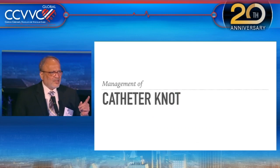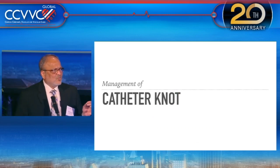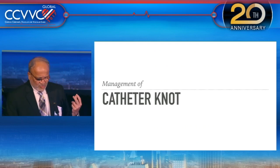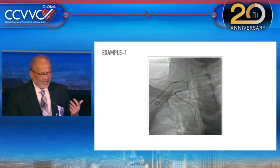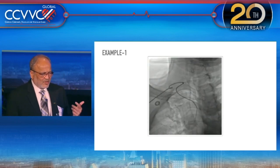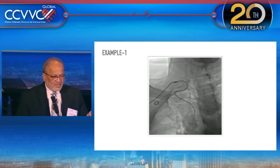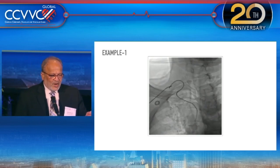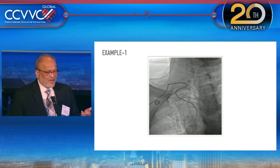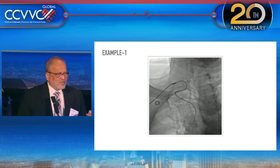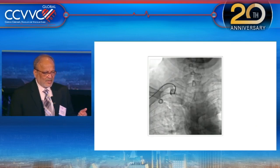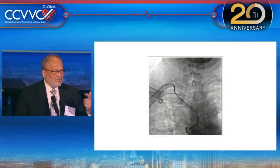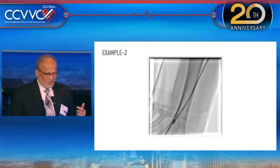Catheter knot is a problem because the radial is a small artery, and if there are very bad subclavian, axillary, or innominate tortuosities you can come across this type of catheter knot. Here you can see the distal part of the catheter is not moving. We could remove the knot using a wire inside, reduce the knot, remove the catheter, and demonstrate the complex tortuosity.